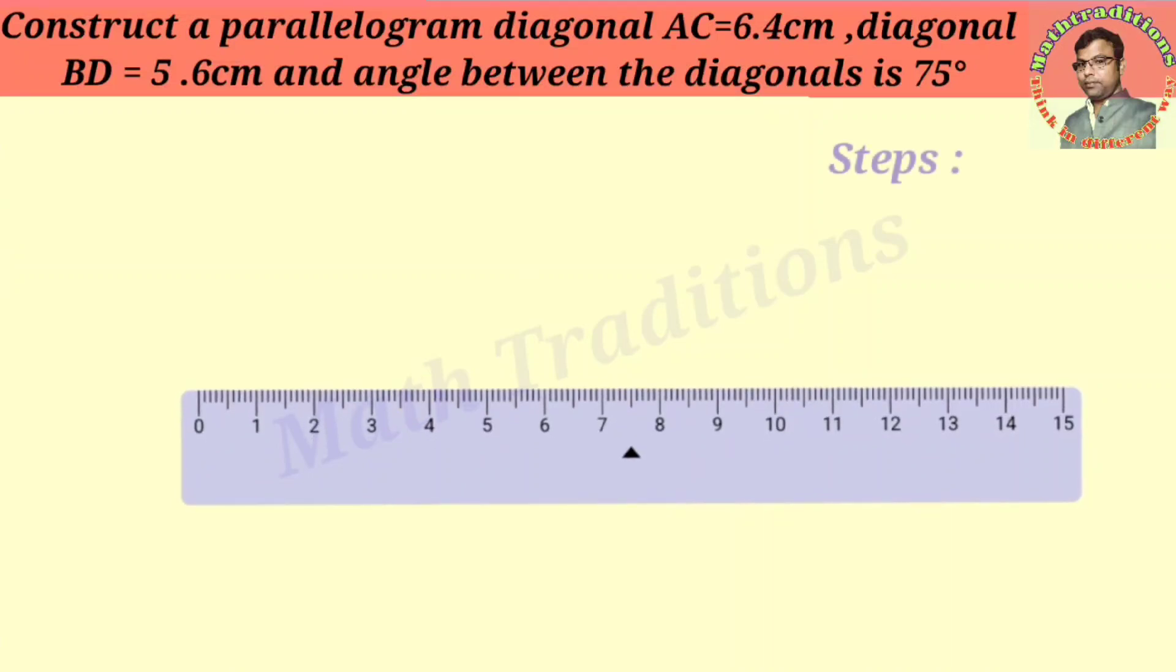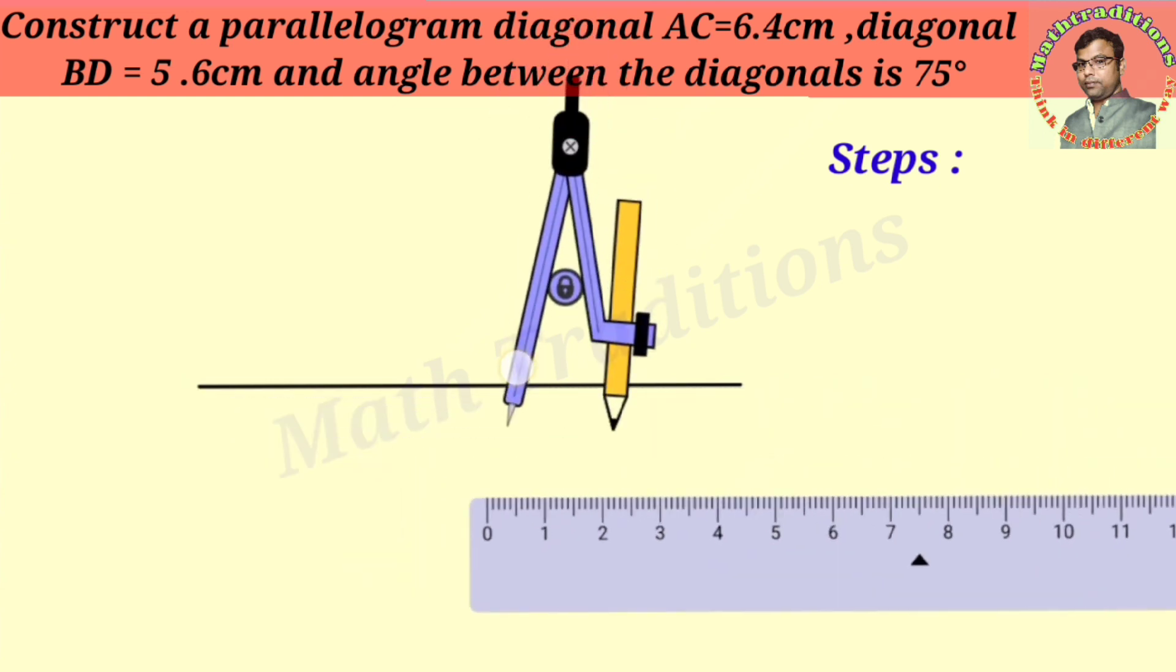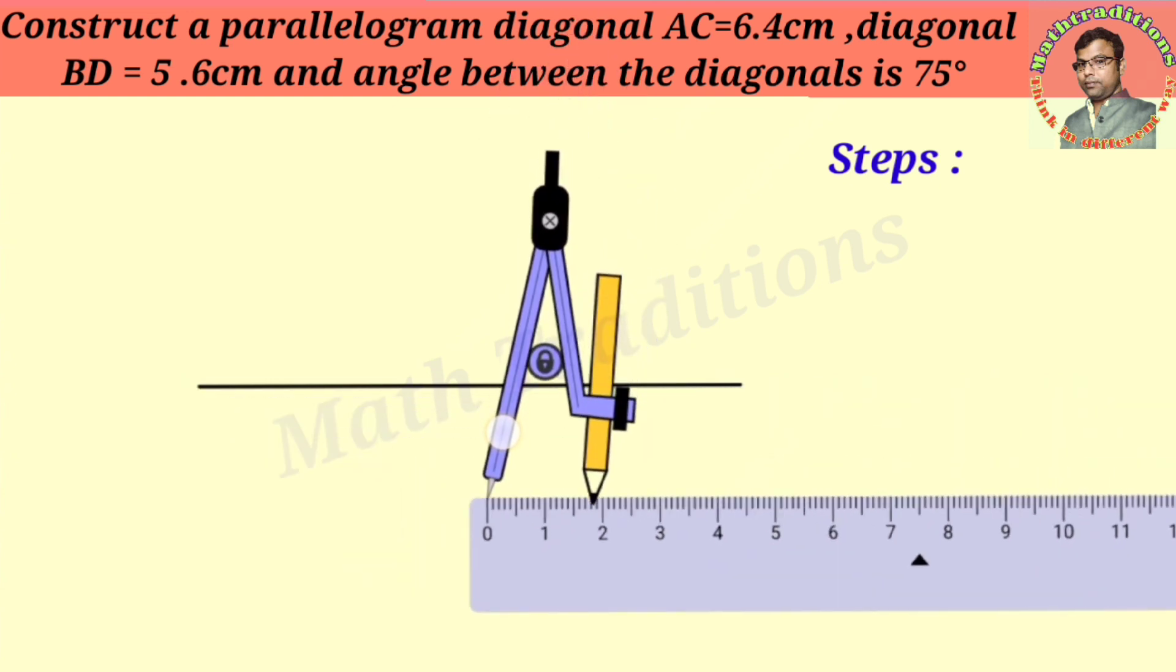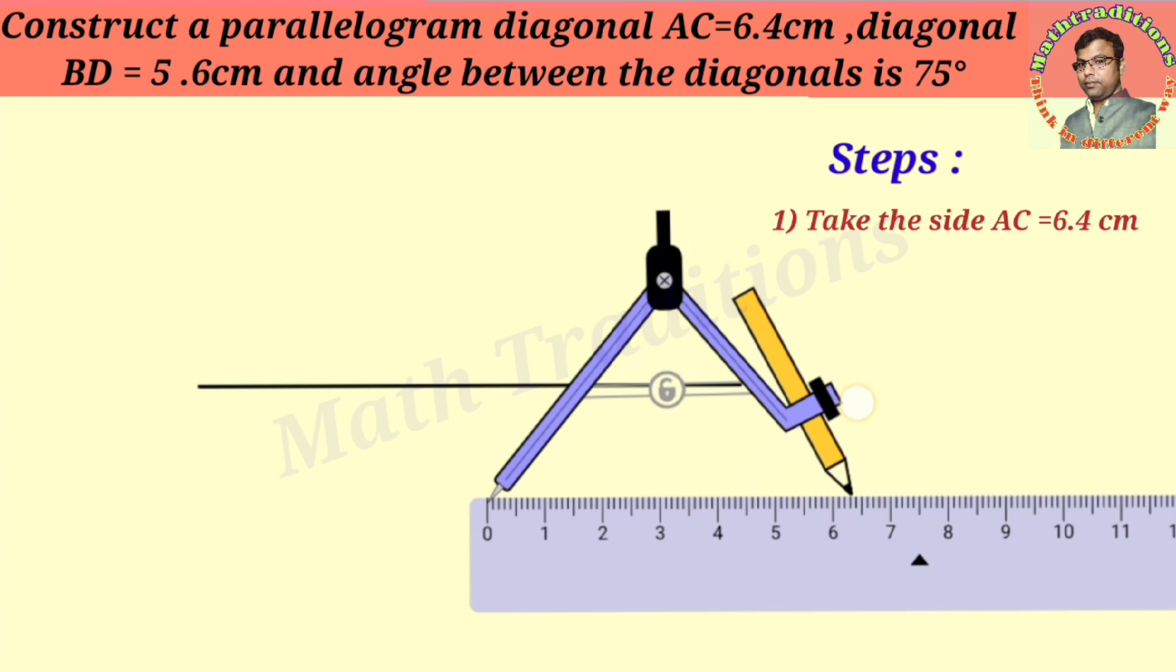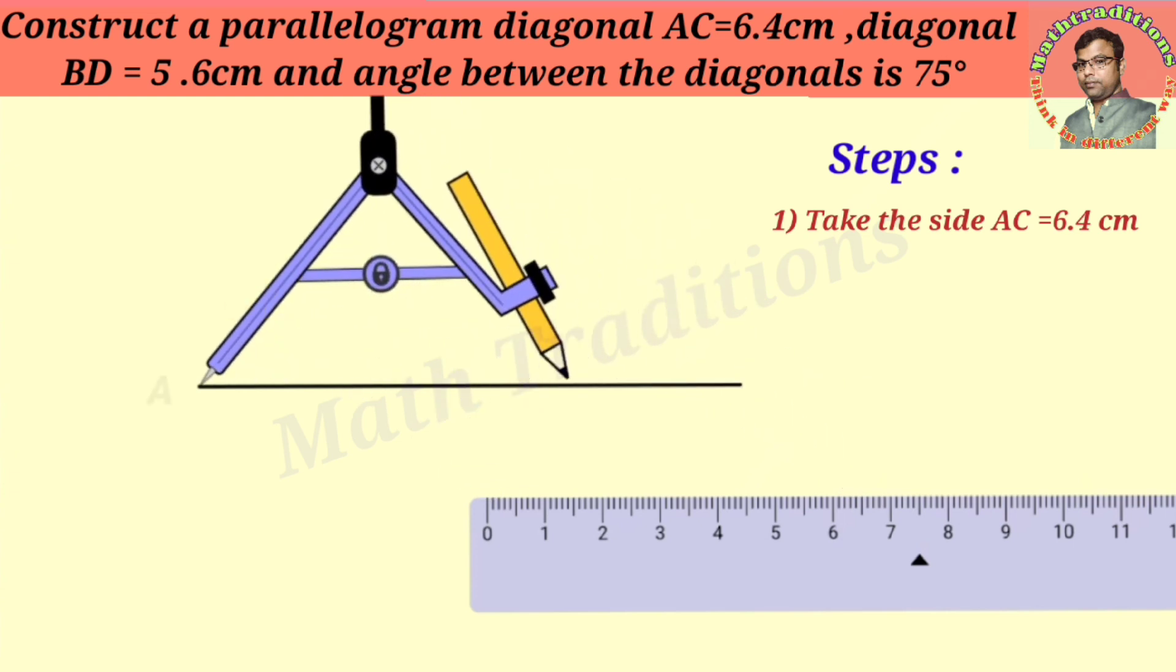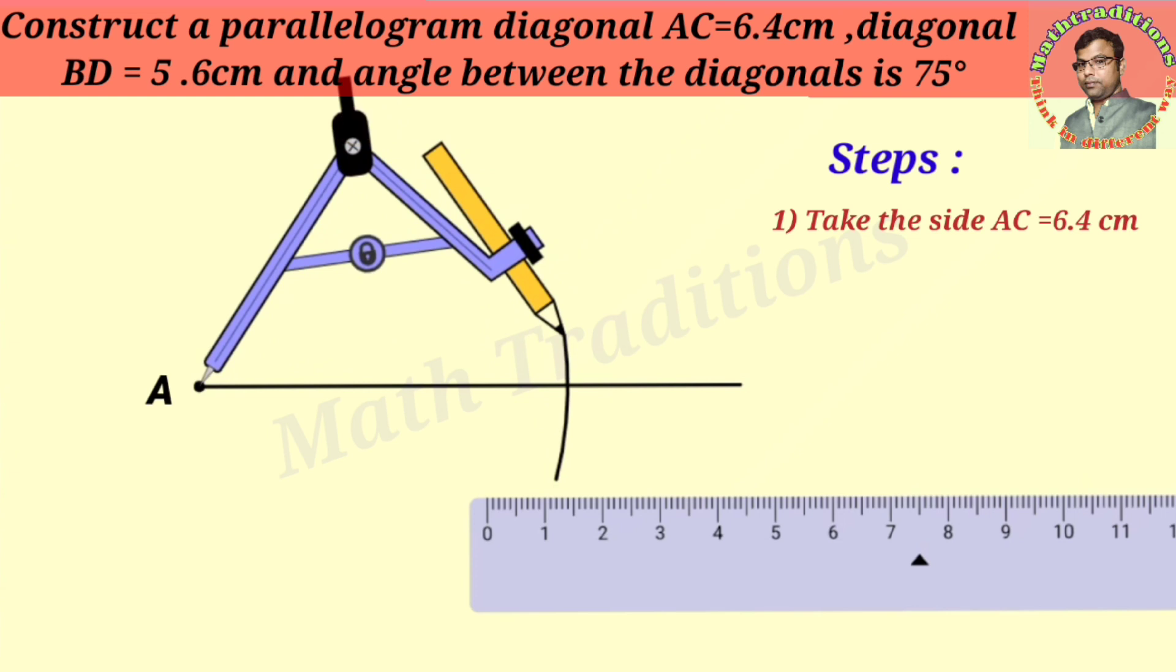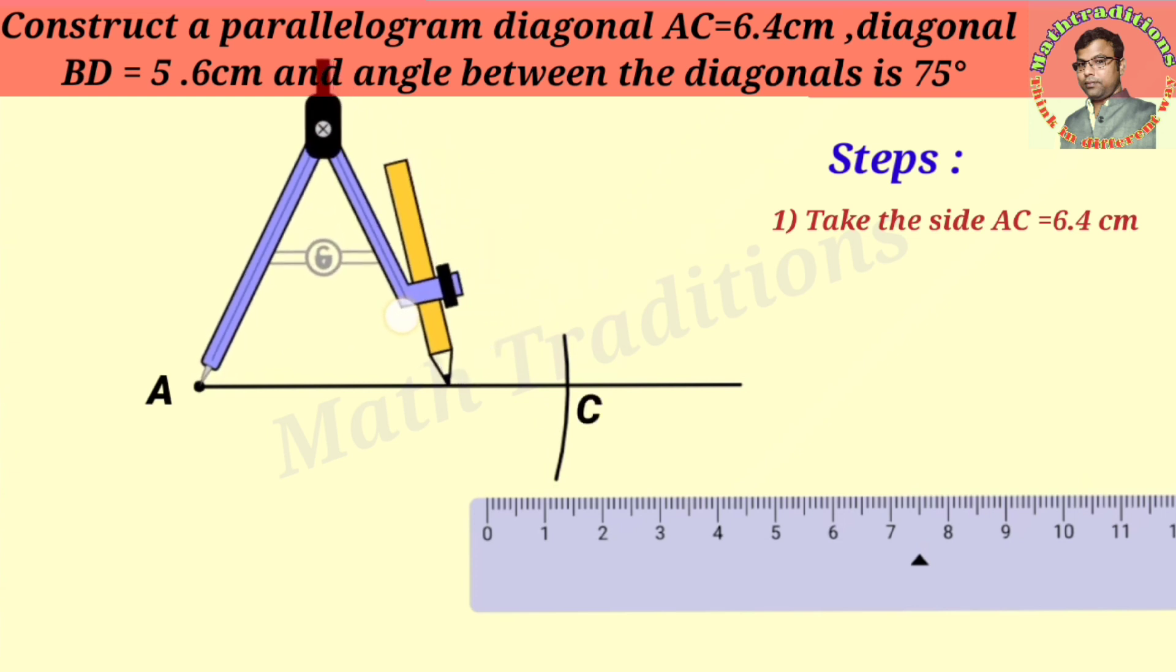In this class we will construct a parallelogram with given diagonals: diagonal AC equals 6.4 centimeters and diagonal BD equals 5.6 centimeters. The steps are shown on the screen. First, we take the diagonal AC of 6.4 centimeters.